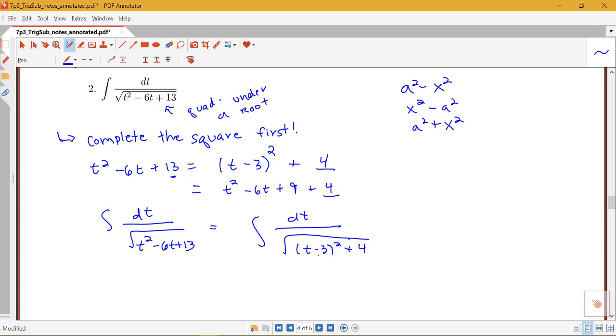So notice that the form that I have now, that's always what I'm asking myself first, is what form? I have some kind of variable thing squared plus a number of things squared. It doesn't matter that there's a minus 3 in here. What I have is something, some variable thing squared plus 4. And so the one that has plus in it is the a squared plus x squared form.